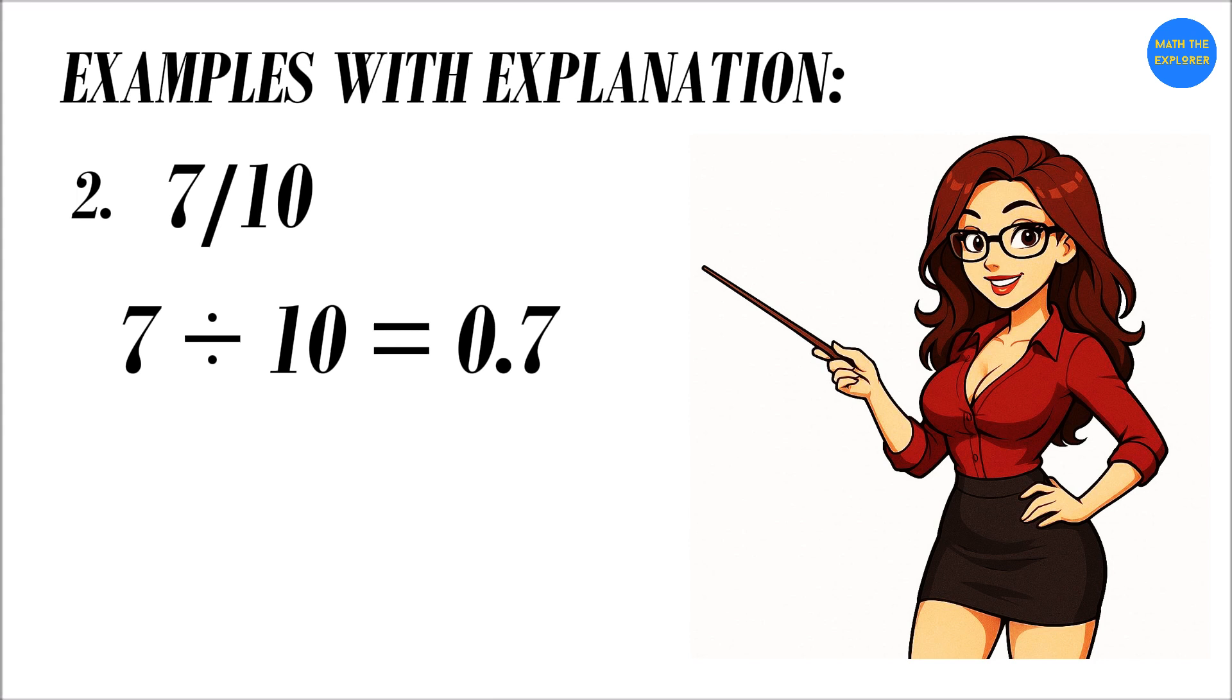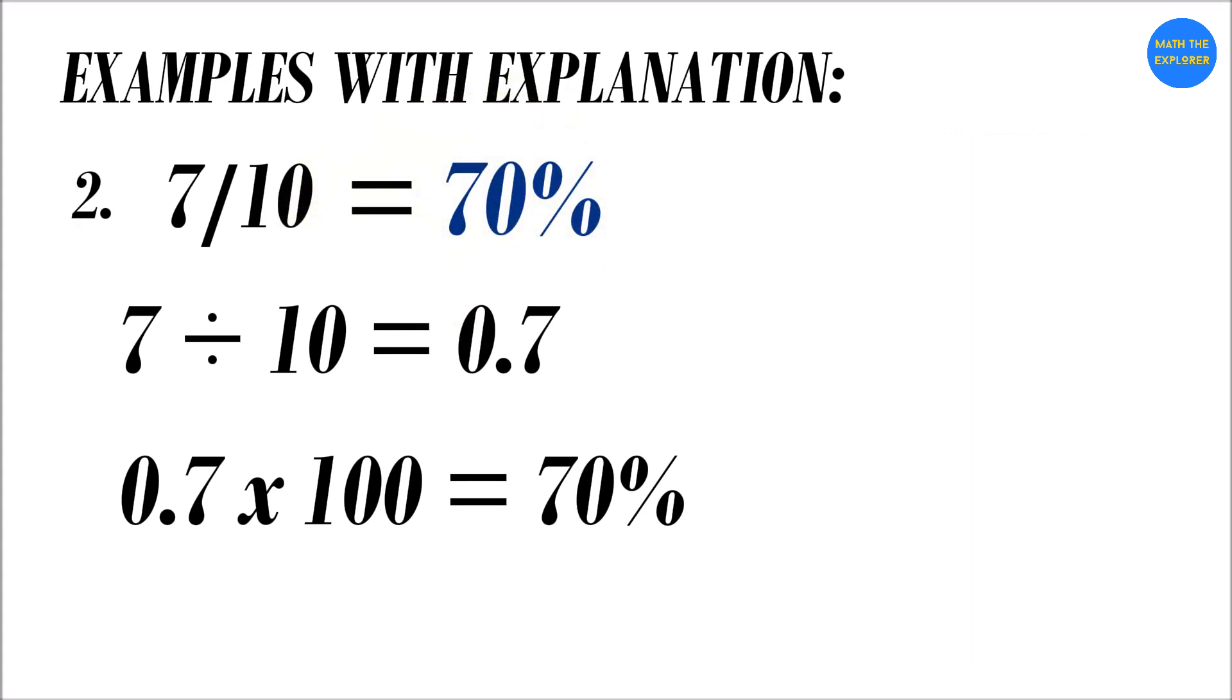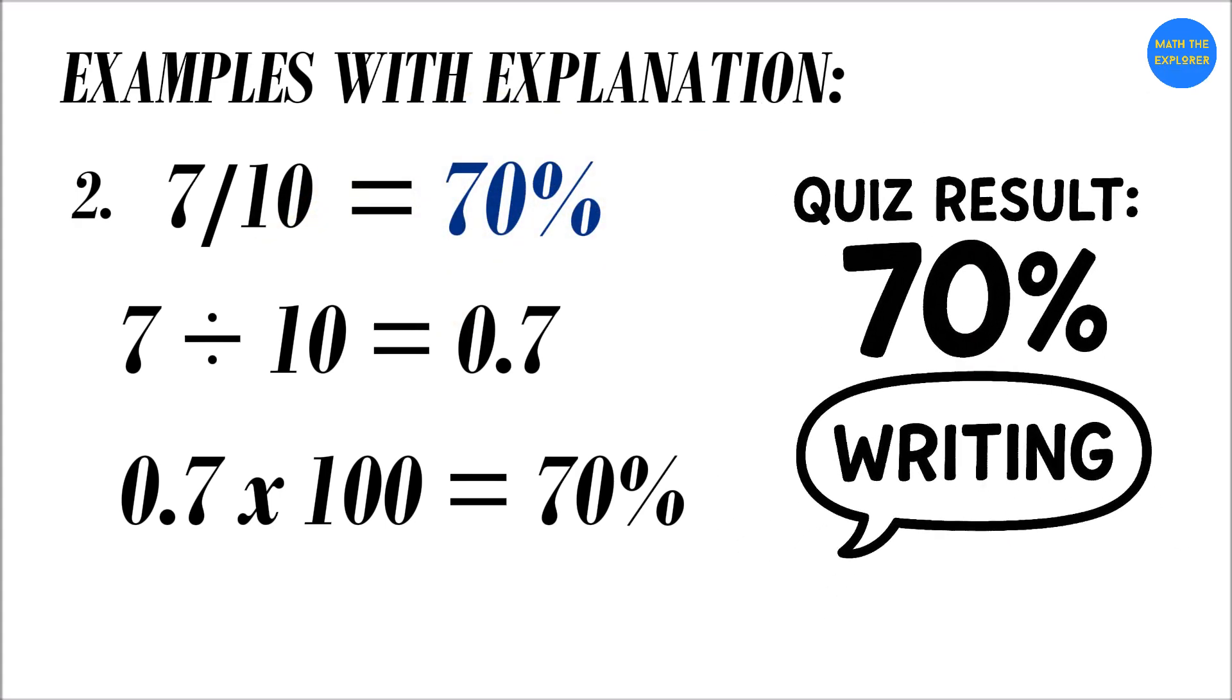Seven-tenths. Divide seven by ten. Seven divided by ten equals 0.7. Next, multiply by 100. 0.7 times 100 equals 70 percent. So, seven-tenths equals 70 percent. If you score seven out of ten in a quiz, that means you got 70 percent correct.